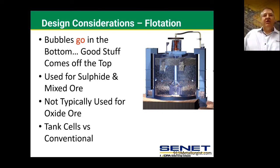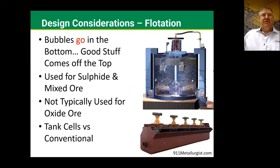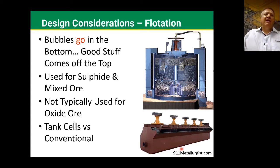The next consideration is tank cells or conventional cells. Tank cells are a tank where the slurry is introduced on one side. Air is added down the impeller, and the agitator mixes the air and the slurry. The concentrate comes off the top while the slurry or tails come out the bottom. Conventional cells are very similar in concept but much smaller — there are a whole bunch of them in a small unit. The slurry is entered on one side and comes out the other side. Air is added in each one, the concentrate comes off the top, and the slurry goes through. Conventional cells are usually only about eight cubic meters and would only be used on smaller plants or plants where there's a very high mass pull.